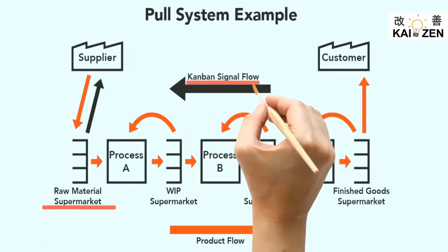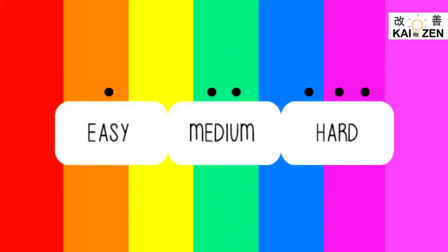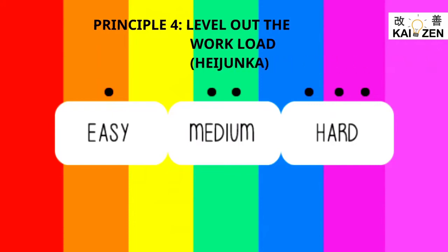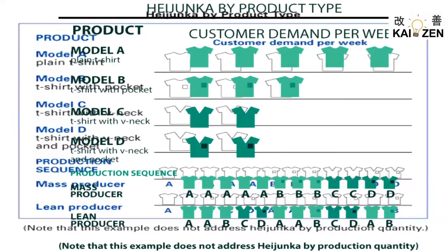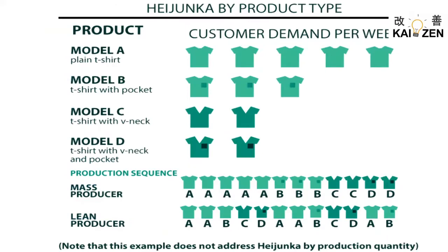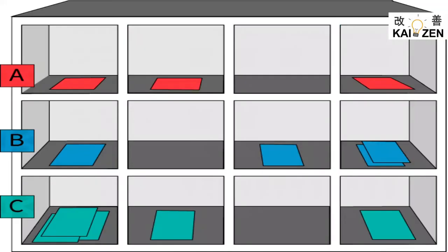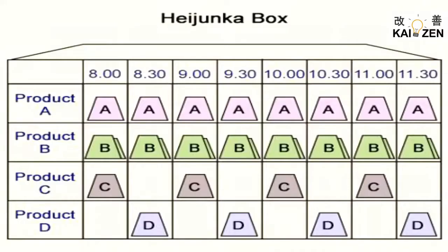Principle 4: Level out the workload. Toyota believes that to create a flow, stability is needed. Toyota puts in a lot of effort to level out the workload. Standardization is possible only when the production is leveled out.